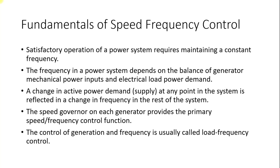A change in active power demand at any point in the system is reflected as a change in frequency throughout the rest of the system. The good thing about frequency is that it is a global parameter — the change in frequency is seen the same throughout the entire system. Whenever there is a difference between load and generation, there will be a change in frequency, and this change will be sensed by each and every generator in the system. The speed governor on each generator provides the primary speed-frequency control function. This control of generation and frequency is usually called load frequency control.